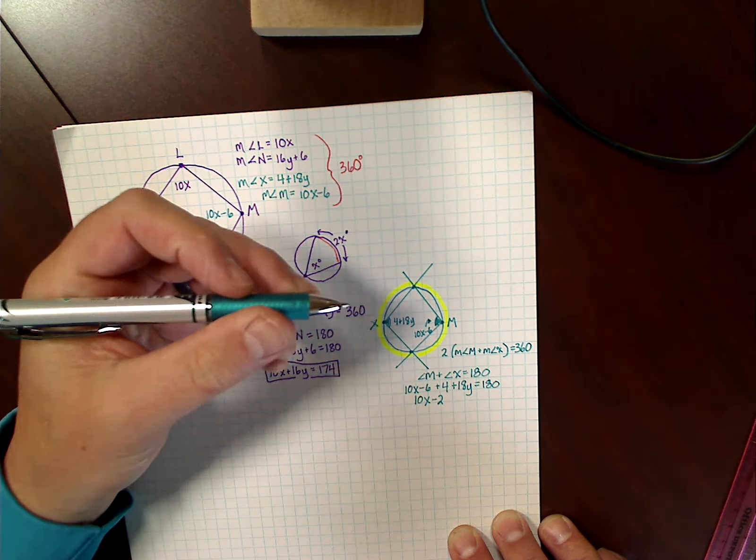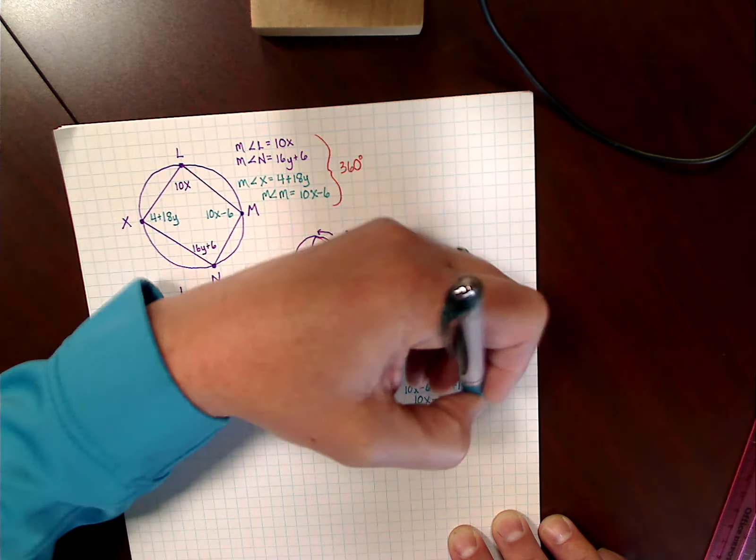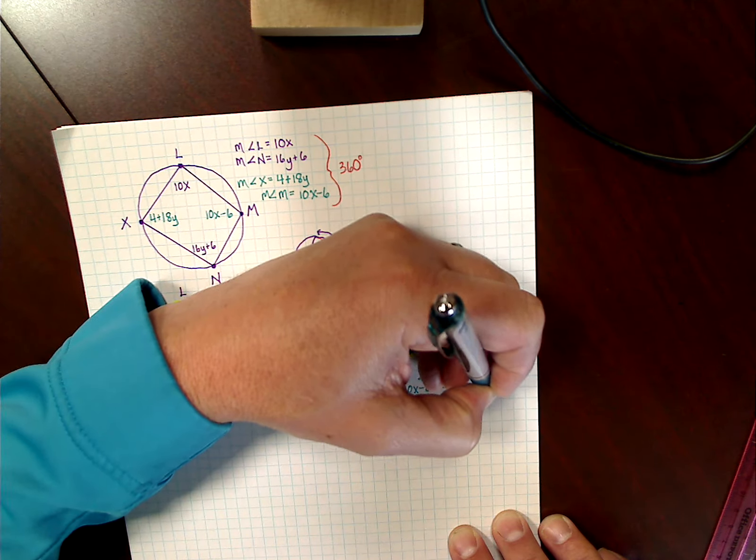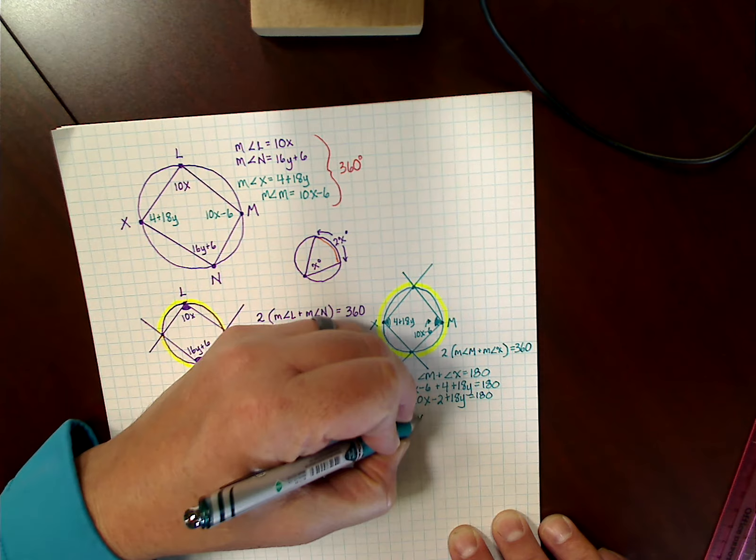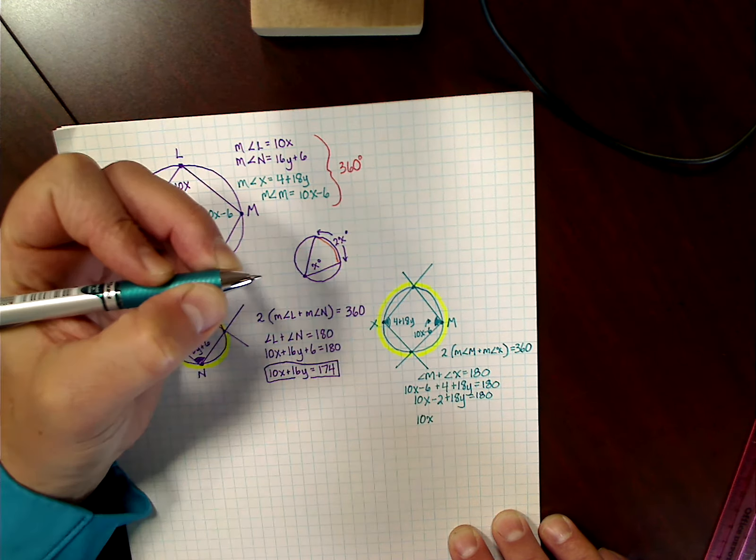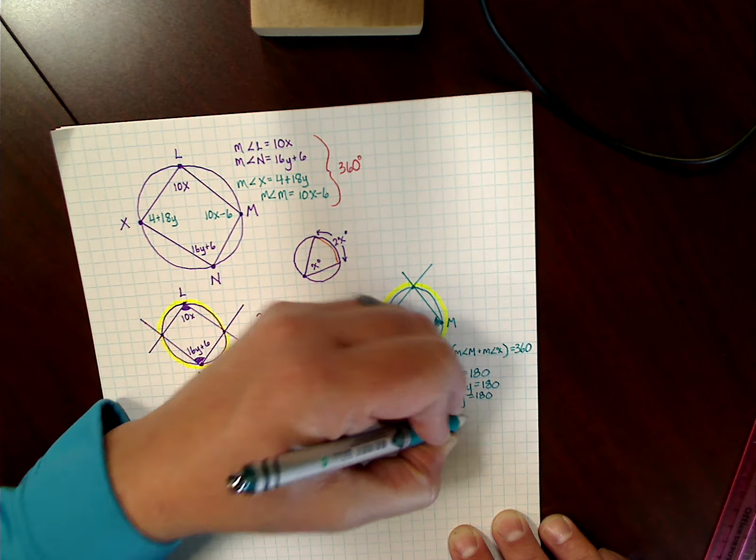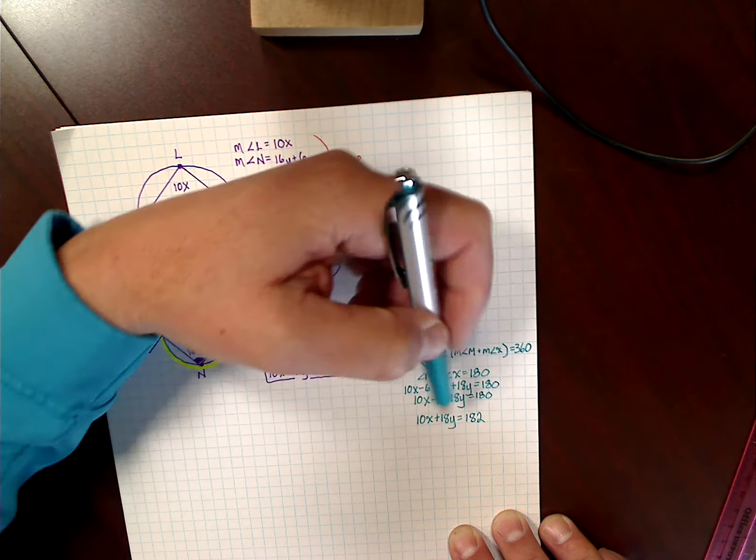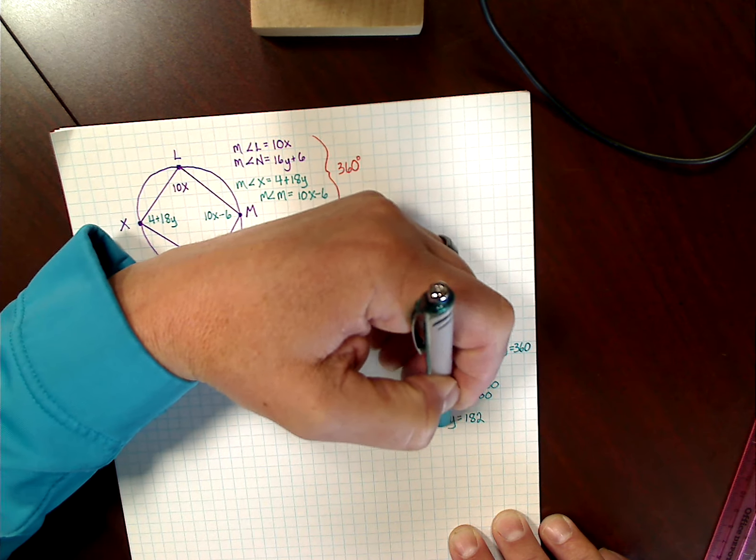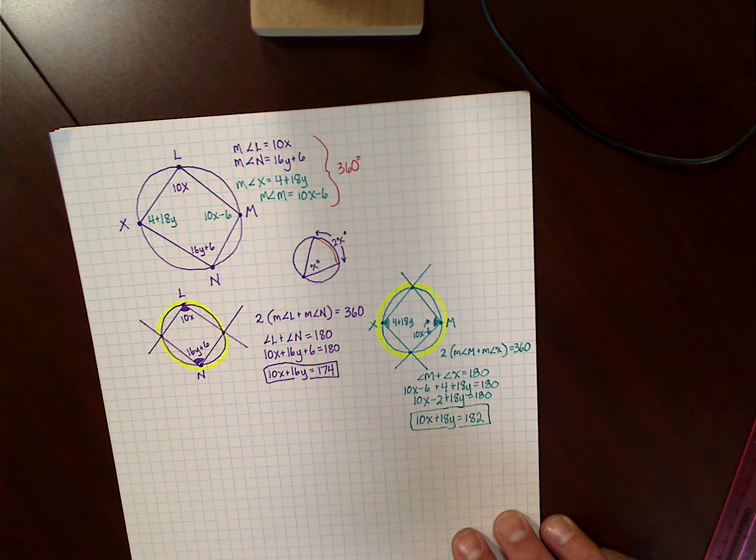Combine your like terms. 10x minus 2, negative 6 plus 4, plus 18y is equal to 180 degrees. I'm going to add 2 on both sides to get my standard form. 10x plus 18y is equal to 182. Now I've got my second equation.